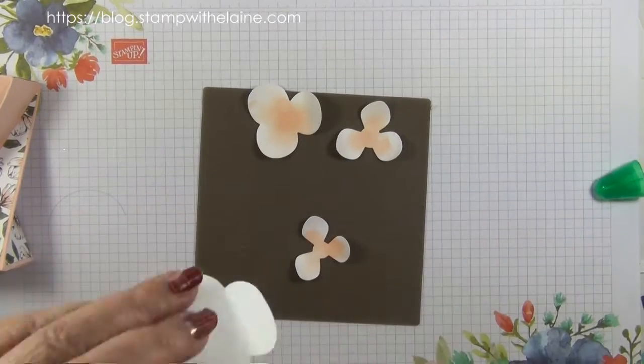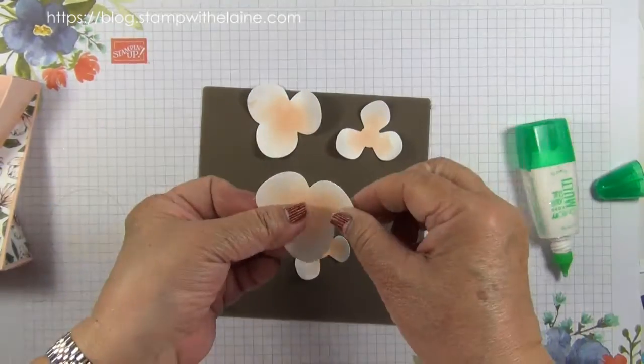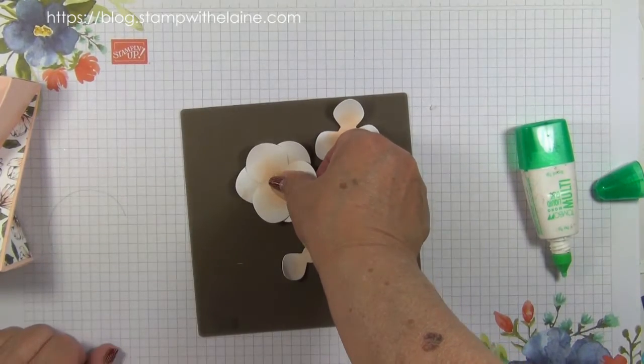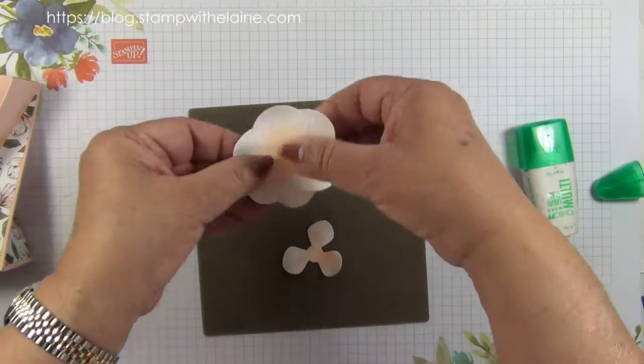Next you want to layer them together. So a bit of glue on one of them, the larger petal, and pop it down opposite the other petals.